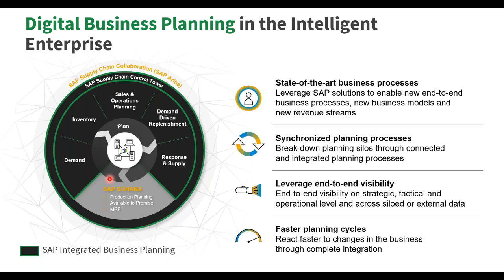IBP is a platform comprised of demand, inventory optimization (rewritten from the SmartOps acquisition in 2013), sales and operations planning — which is the genesis of where this started — response and supply (what we're here to talk about today), SAP Control Tower (the ring around it all), and DDR (demand-driven replenishment), a unique replenishment methodology based on pull methodology from the demand-driven institute, available both in IBP and S4.